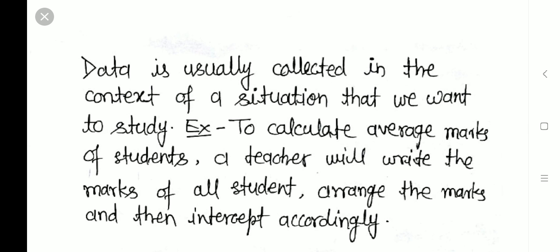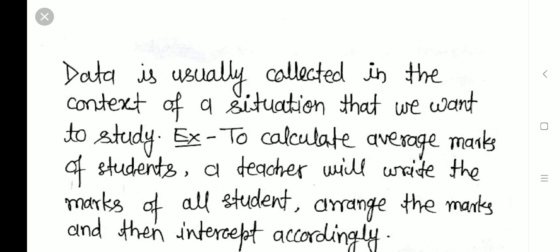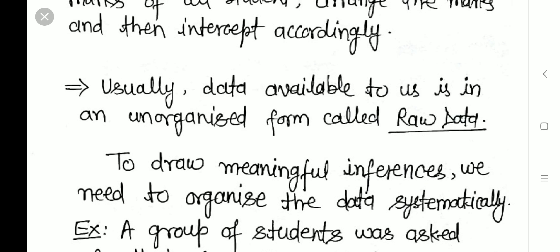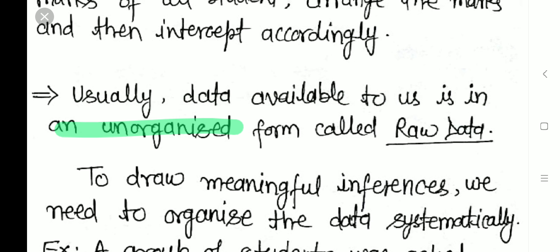Data is usually collected in the context of a situation that we want to study. For example, to calculate the average marks of students, a teacher will write the marks of all students, arrange them, and then interpret accordingly. The data available to us is usually unorganized — in raw form — and to draw meaningful inferences we need to organize it systematically.